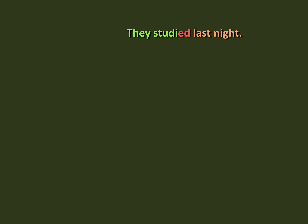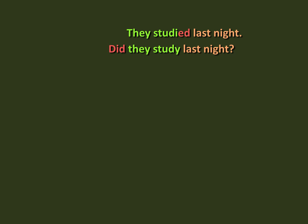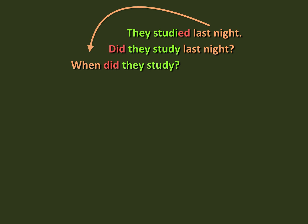Let's see the pattern from an example, starting with a normal sentence. There's no helping verb, but when we make the yes-no question, see how the 'did' comes from the 'ed.' This is now the helping verb. Now, the topic is a time point — it's last night. So the question will be 'when.' Again, the WH comes before the helping verb.